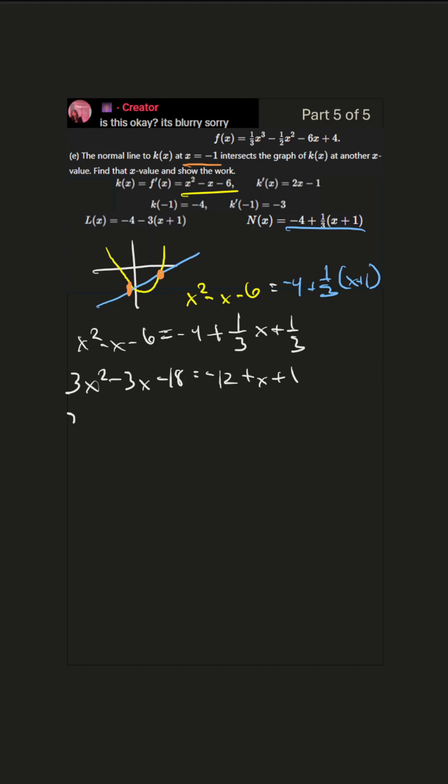Okay, now we'll get everything over to one side. We have 3x squared minus 4x, let's see negative 18 plus 11 is negative 7, equals 0. So now we use the quadratic formula: x equals negative b plus or minus square root b squared minus 4ac all over 2a.